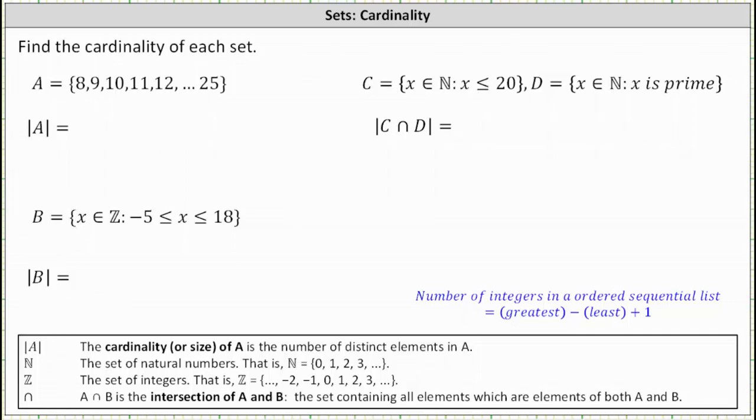We're asked to find the cardinality of each set. The cardinality of a set is the number of distinct elements in the set.